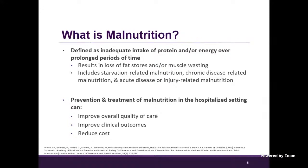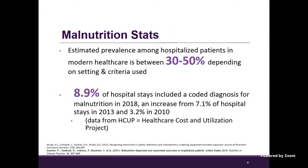We know as nutrition professionals that prevention and treatment of malnutrition in the hospitalized setting can improve overall quality of care, improve clinical outcomes, and reduce costs both for the patient and for the hospital. Looking at some statistics about malnutrition, it's estimated that the prevalence of malnourished hospitalized patients is between 30 and 50 percent. There's some wide variability here, and that really depends on the setting and the criteria used.